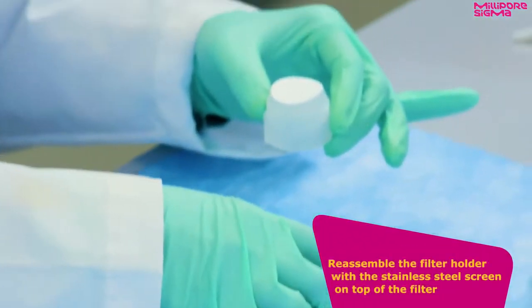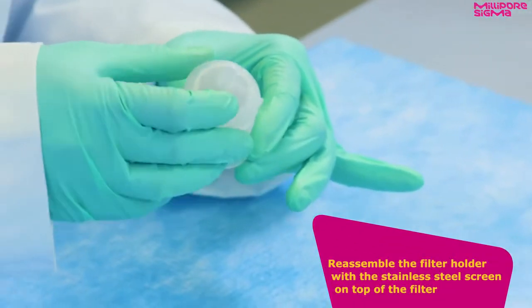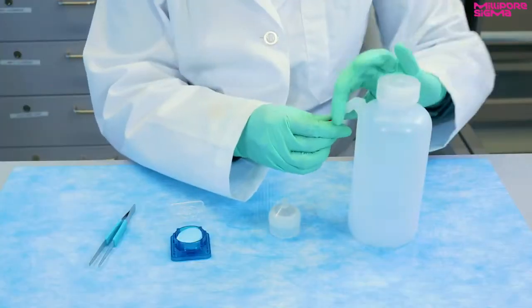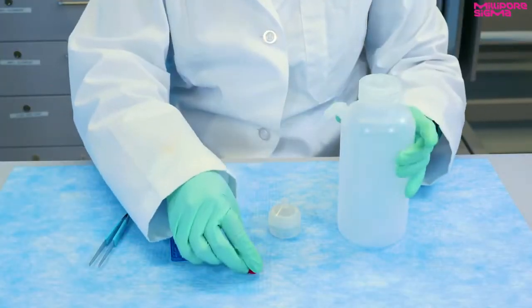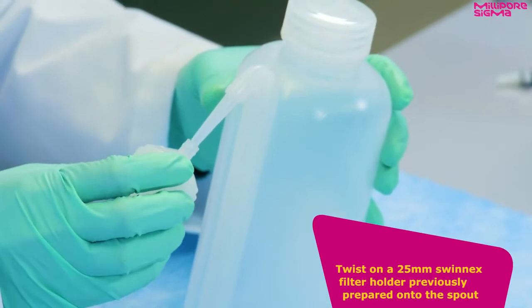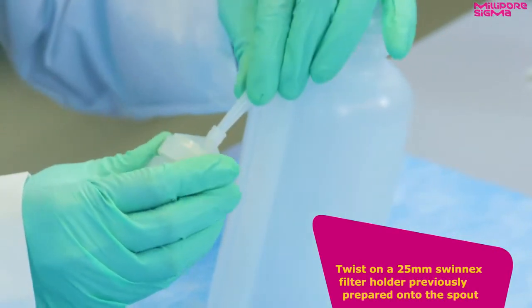Reassemble the filter holder with the stainless steel screen on top of the filter. Remove the plastic cap from the spout of the wash bottle and twist on the 25 millimeter Swinix filter holder previously prepared onto the spout.